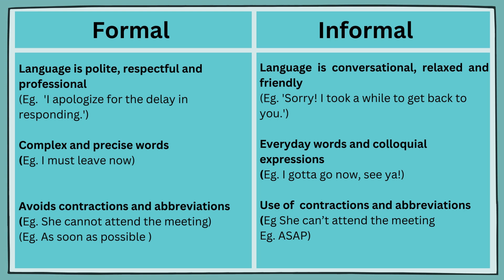Contractions and abbreviations make writing informal and therefore should be avoided in formal writing. For example, 'She cannot attend the meeting' is formal, whereas 'She can't attend the meeting' is informal. Similarly, 'As soon as possible' is formal, whereas 'ASAP,' which is an abbreviated form of 'as soon as possible,' is informal.